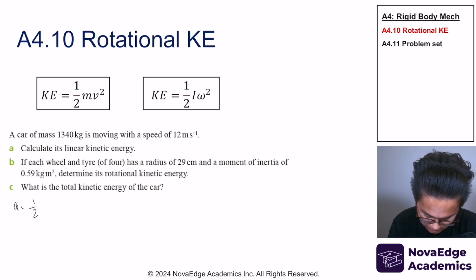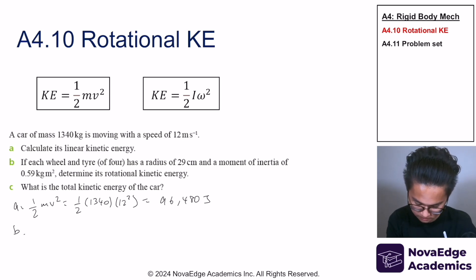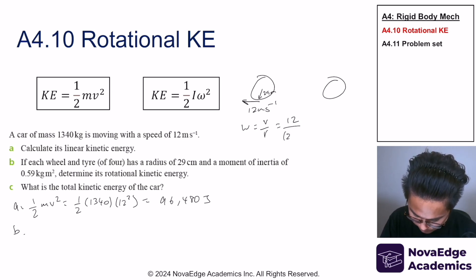Its linear velocity is a very simple, mv squared, which is equal to 1 over 2, 1340, 12 squared. That's going to give me 96,480 joules. Let's draw the wheels. The wheels have a radius of 29 centimeters. Its linear velocity has to be the same thing as a car. So I can actually get that w is equal to v over r, which is equal to 12 over 29 times 10 to the negative 2, which is 41.4 rad per second.